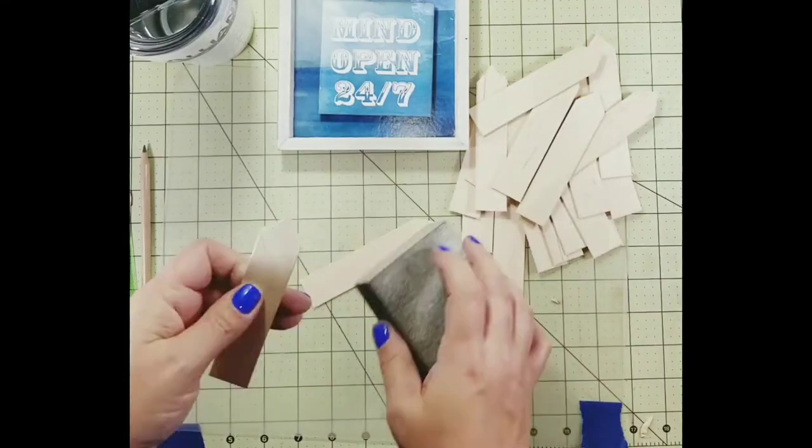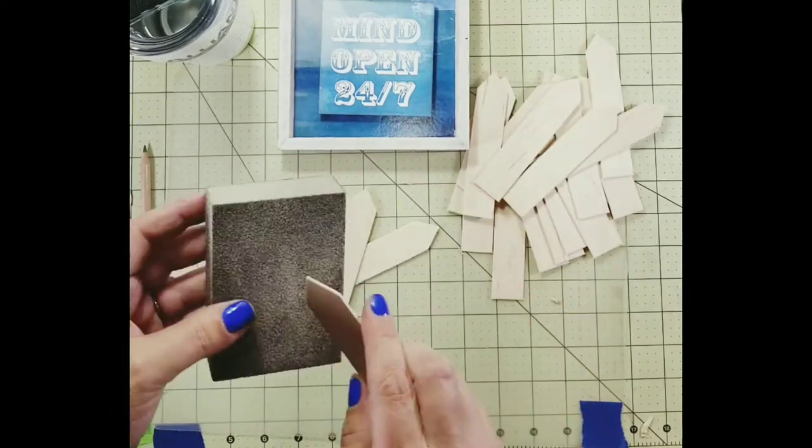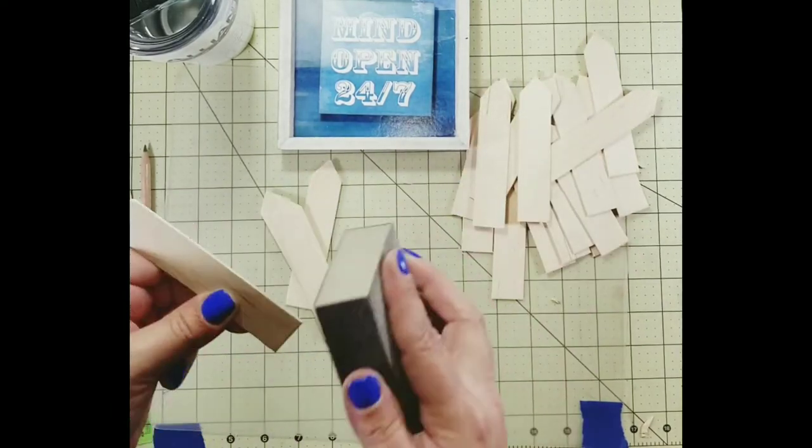Next, using my sanding block from the Dollar Tree, I just sanded all the rough edges down and made those sharp corners more smooth.